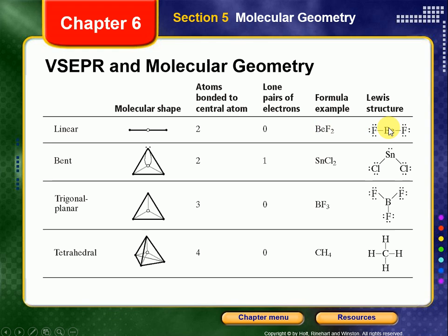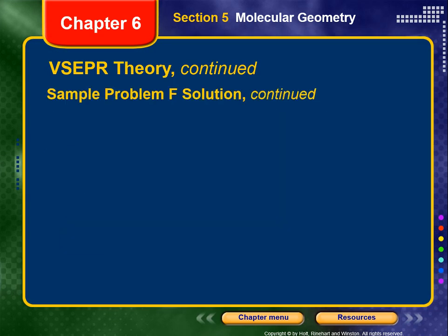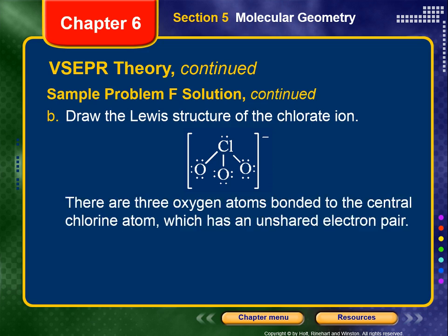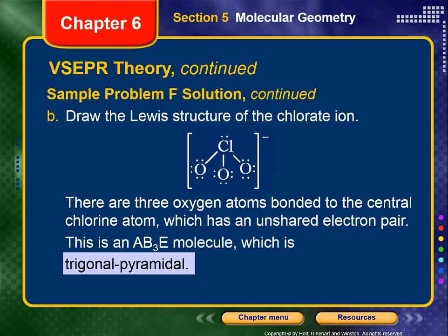Part B: use VSEPR theory to predict the shape of the chlorate ion. We draw the Lewis structure: chlorine is central with three bonded oxygens and a lone pair of electrons on the chlorine atom. Remember we treat polyatomic ions similarly to molecules. There are three oxygen atoms bonded to the central chlorine, which matches the AB3E format. Since the lone pair on the chlorine pushes the bond angles of the chlorine-oxygen bonds down, the shape is trigonal pyramidal.